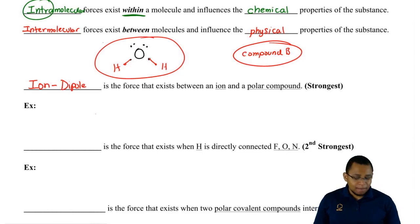An example of ion-dipole is we could have NaCl, remember this is sodium chloride, it's ionic, and we throw it into water.